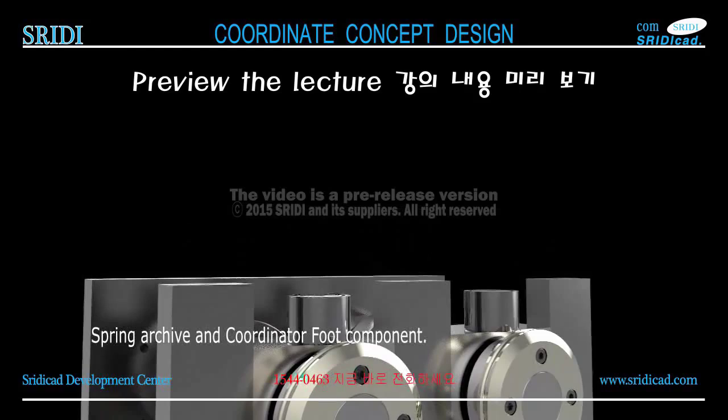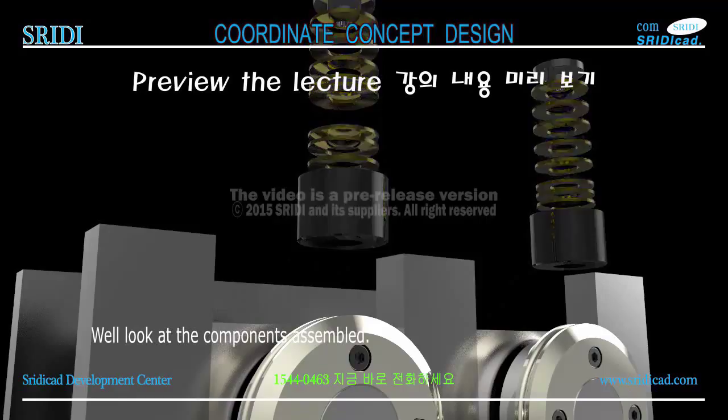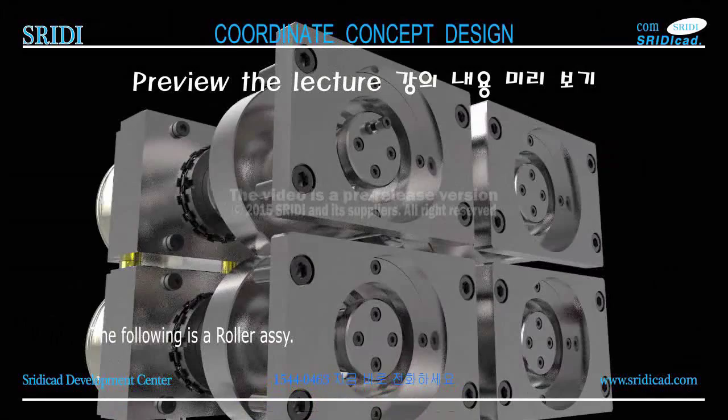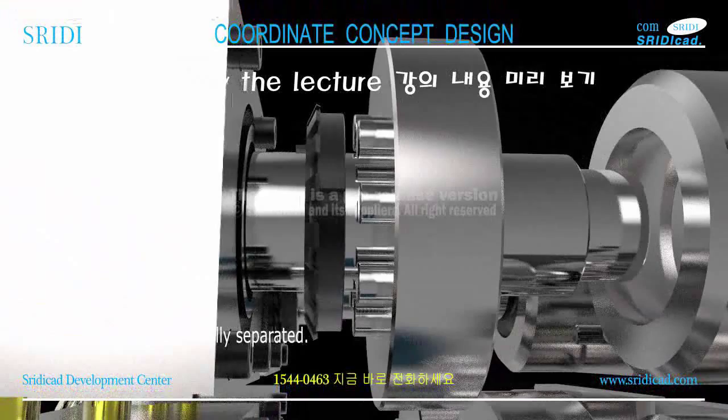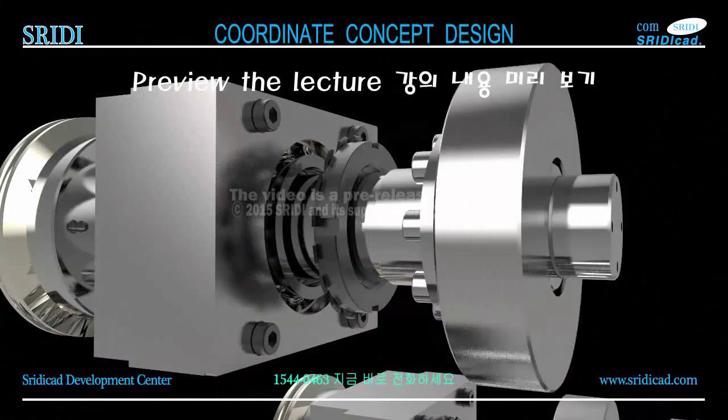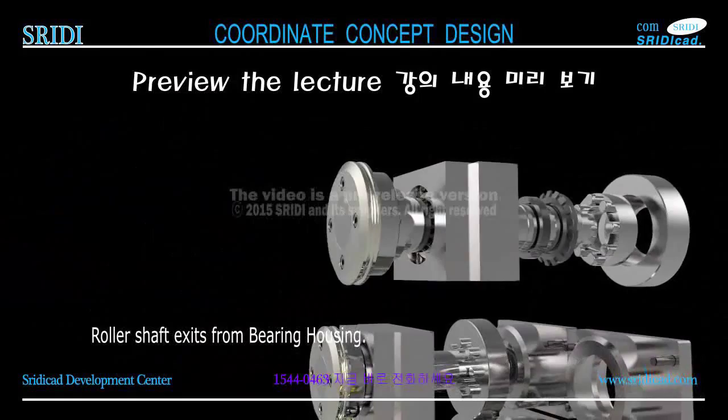The following is a roller assembly. The sub-components include the bearing stopper. The roller assembly is locked tight as a component. It includes lock washers and lock nuts. The roller assembly is finally separated; the roller shaft exits from the bearing housing. Components are the roller assembly and socket bolts.